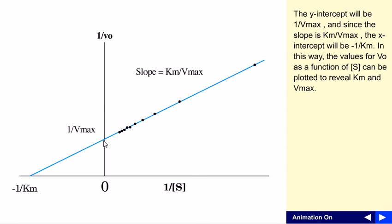Two intercepts can be obtained. One is the y-intercept, which is 1 by Vmax. As we stretch this line until it reaches the x-axis, this x-intercept will be minus 1 by Km.